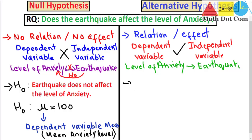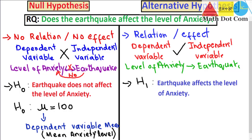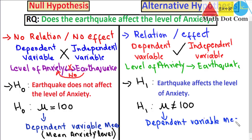In the case of the alternative hypothesis, it is represented by H1 and its statement is: 'Earthquake affects the level of anxiety.' It is the opposite of the null hypothesis. It can be written as H1: μ ≠ 100, meaning the anxiety level of the population does not equal 100 when there is an earthquake. Here again, μ represents the dependent variable mean — the mean anxiety level.